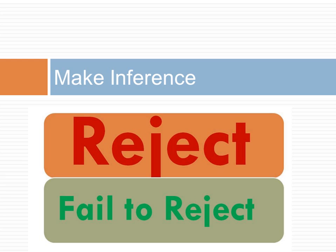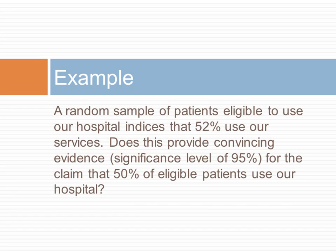Next step in our framework is to infer from the sample if the population has the hypothesized null value. If the p-value is less than 0.05 or a preset level of type 1 error, the null hypothesis is rejected. Let us look at an example. In a random sample, 52% of eligible patients use our hospital service. Does this provide convincing evidence, at least at the level of 95%, for the claim that more than 50% of the eligible patients use our hospital?